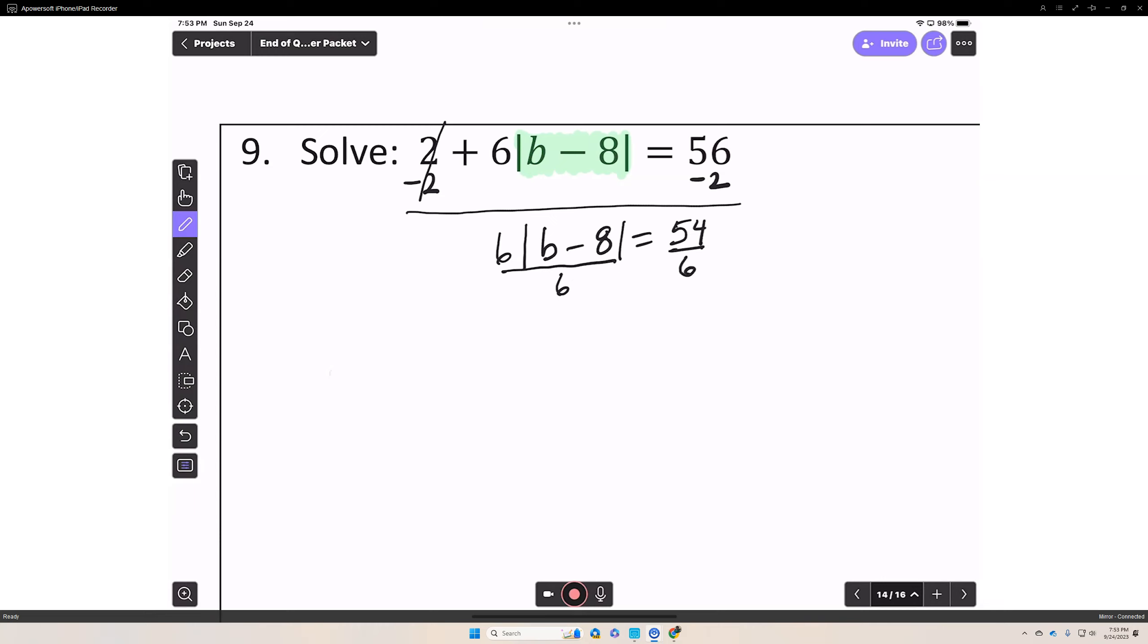If you look at the left side of this absolute value equation, 6 divided by 6 is 1. So you're left with the absolute value of b minus 8 equals 54 divided by 6.